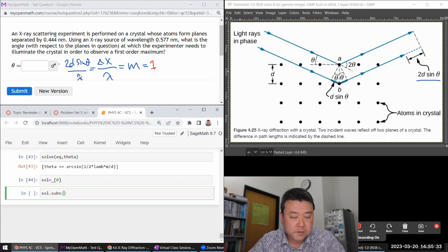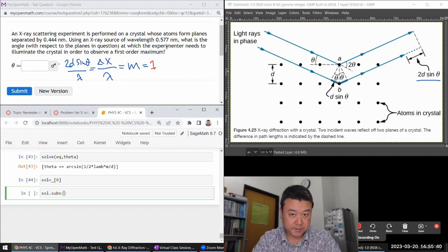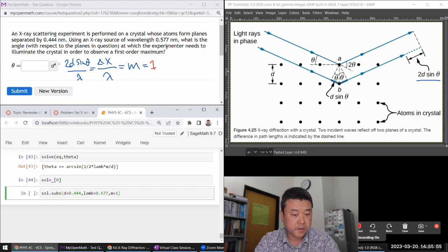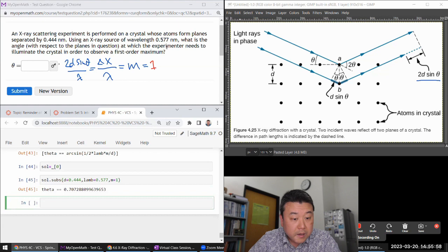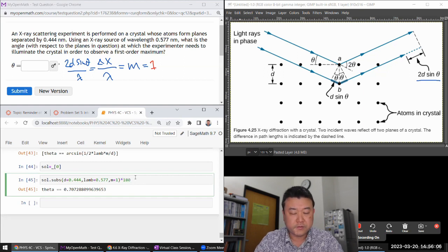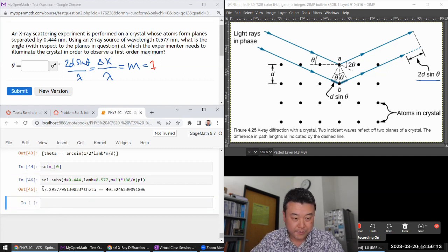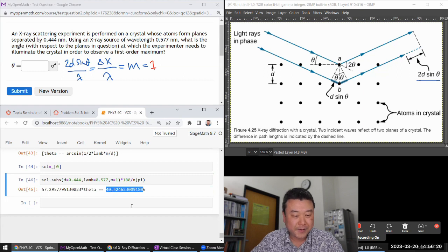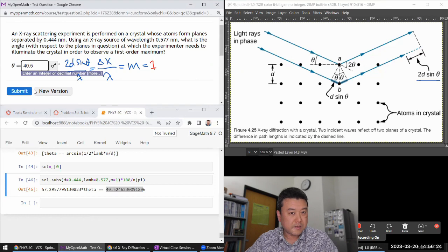And then I'm going to substitute in the numbers we are given. I think because d and lambda will take the ratio, if I plug in both of these numbers in nanometers, then we'll be fine. Nanometers will cancel. So the separation between planes is 0.444 nanometer. Wavelength is 0.577 nanometer. Short x-ray. And M is equal to 1. I think that's everything. And this is in radians. So you have to make sure you multiply by 180 degrees divided by pi to convert radians into degrees. Careful in how you read it. This is the left-hand side. This is just my conversion factor. This right-hand side is the number I'm looking for: 40.5.